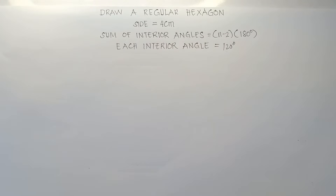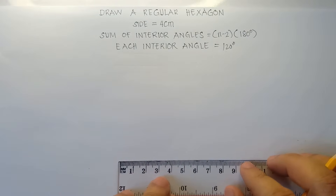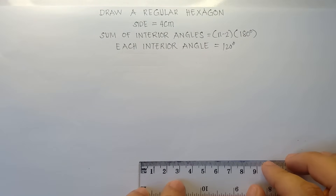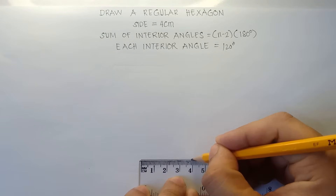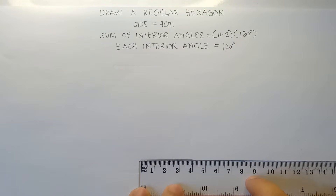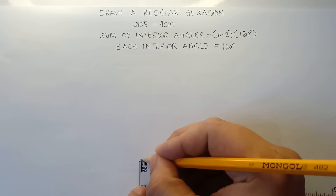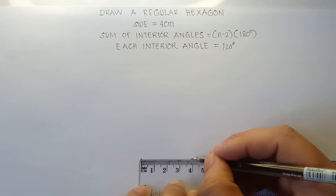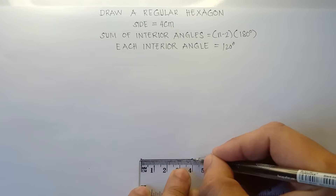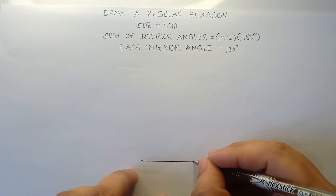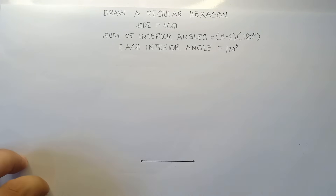Alright, so let's draw the regular hexagon. First step: draw a horizontal line that is 4 cm. These are centimeters on the top part — 1, 2, 3, 4 — so 4 cm. You put endpoints, then you can sketch this one with a ball pen. Next step, we need to use our protractor for the angle. So use the protractor for the angle.